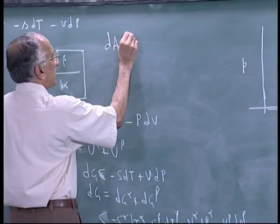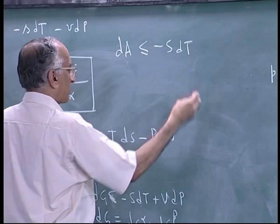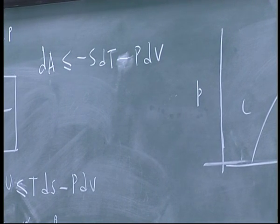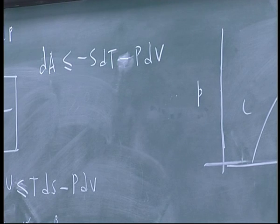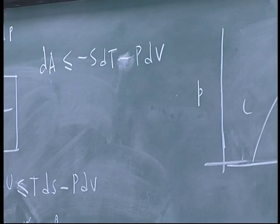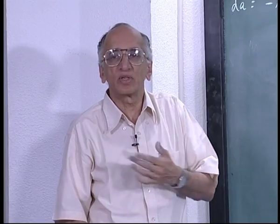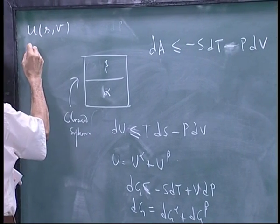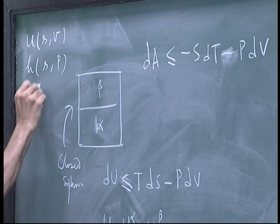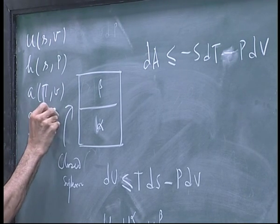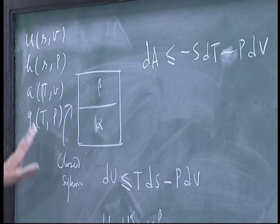Let me come back and write dA less than or equal to zero. If you are doing adiabatic systems with pressure as a variable, then S and P are the natural variables and you choose H. The equations are simply: U is a natural function of S and V, H is a natural function of S and P, A is a natural function of T and V, and G is a natural function of T and P.